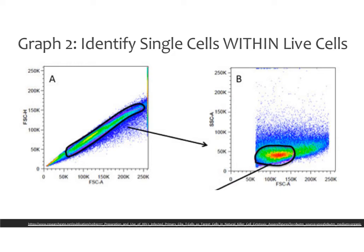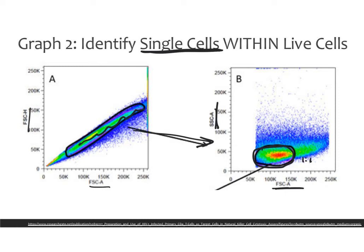The second gate you draw is to identify single cells within your live cells, because you want to make sure that any stain you're looking at is on the single cell level. There are multiple ways to gate for single cells. One strategy is to identify based on FSC area and height. Then you take just that population and graph it onto a second graph, looking at FSC area versus SSC area. If a cell is a single cell, its forward scatter should be the same as its side scatter because it's round — it shouldn't be double forward and single side. The bottom corner represents the one-to-one ratio, so that is the single cell population, and you gate those and isolate them before moving to the next steps.